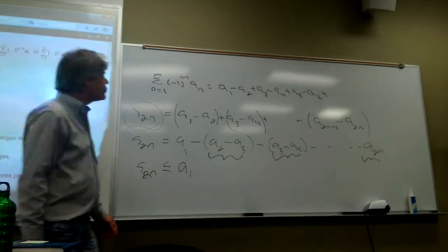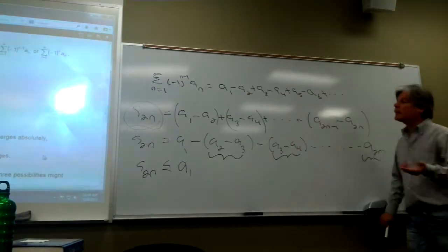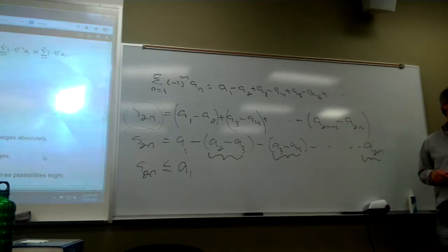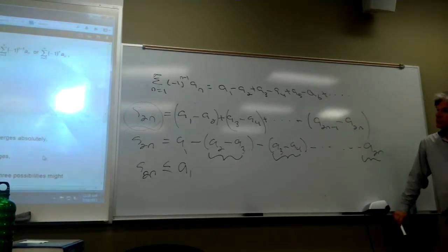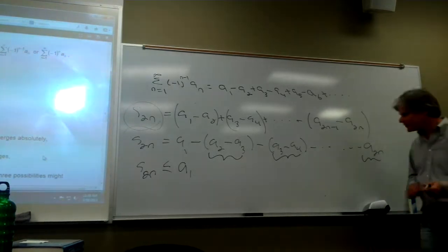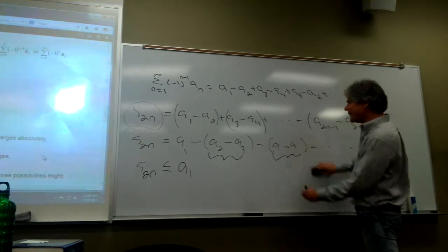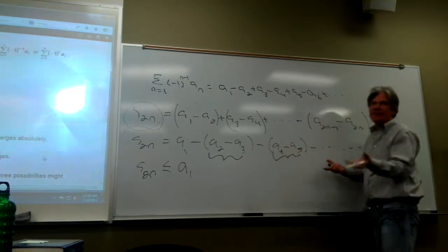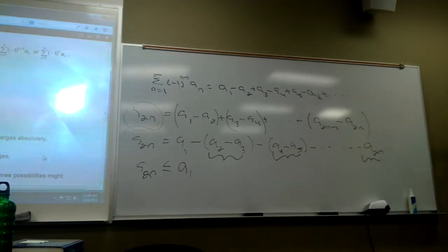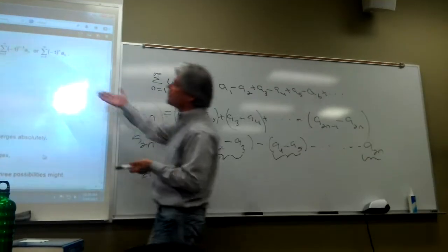You might say, 'but you forgot all the negative terms.' You're right — with the negative terms, I can regroup and get exactly the same limit for the series. So that briefly justifies why the alternating series test works.